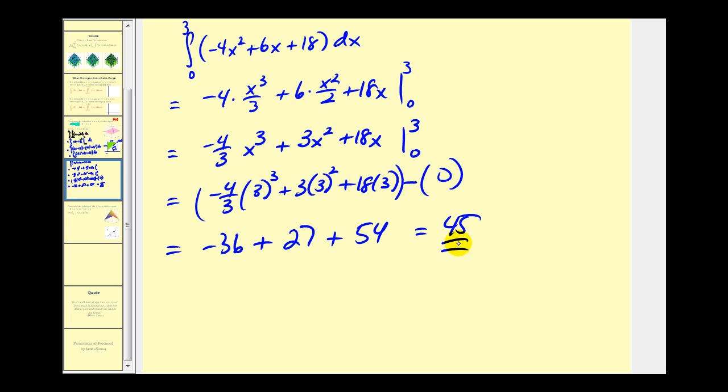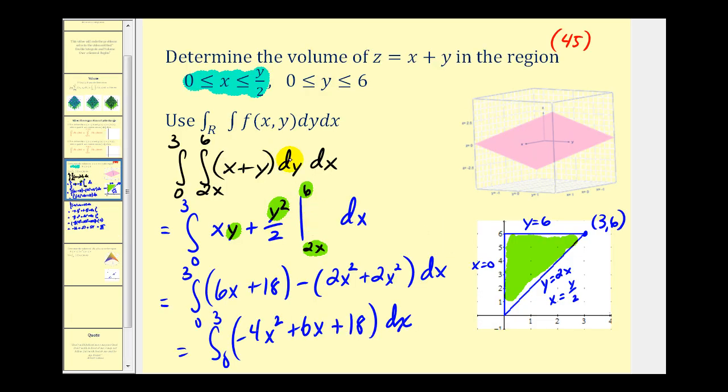This is going to be negative 36 plus 27 plus 54 and this does equal 45. By switching the order of integration we did get the same answer, but we had to make sure that we expressed the limits of integration for y in terms of x. Let's try another one.